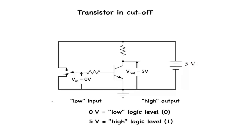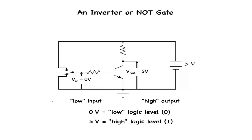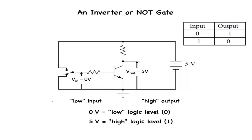What we've created here with a single transistor is a circuit generally known as a solid-state logic gate, or simply a gate. A gate is a special type of amplifier circuit designed to accept and generate voltage signals corresponding to binary 1s and 0s. As such, gates are not intended to be used for amplifying analog signals. Used together, multiple gates may be applied to the task of binary number storage (memory circuits) or manipulation (computing circuits), with each gate's output representing 1 bit of a multibit binary number. Right now, it is important to focus on the operation of individual gates. This gate with a single transistor is known as an inverter, or a NOT gate, because it outputs the exact opposite digital signal as what is input. Gate circuits are generally represented by their own symbols rather than by their circuit diagrams of transistors and resistors. This is the symbol for a NOT gate.